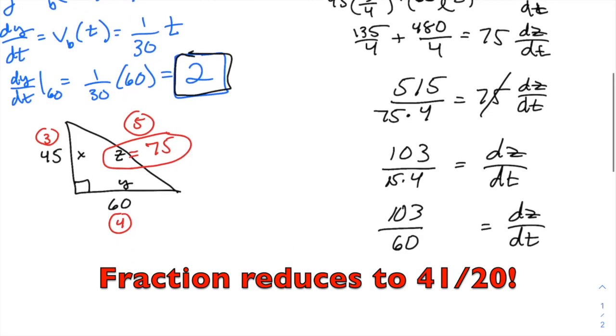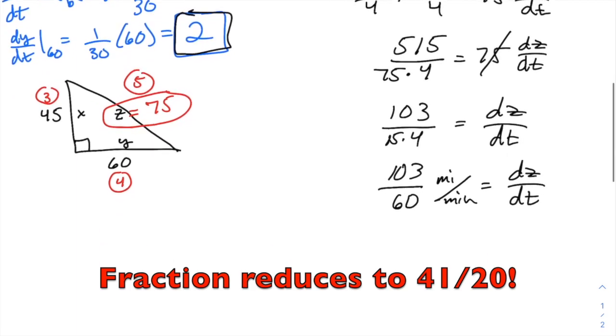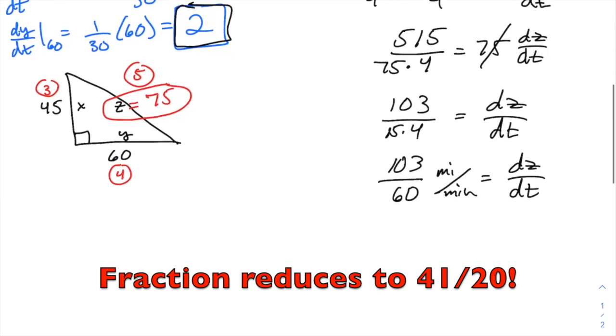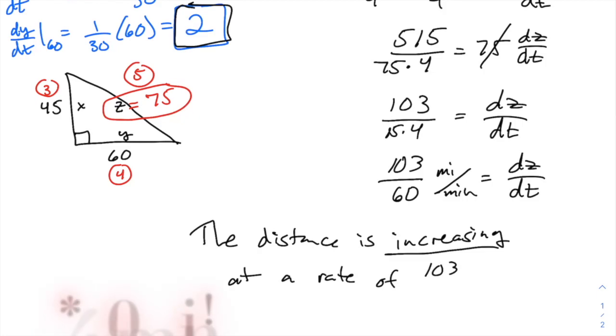And this was again in miles per minute. It's a positive rate of change, of course, because those trains are getting further and further apart. So we would say the distance is increasing since it's a positive rate of change, at a rate of 103/60 miles per minute.